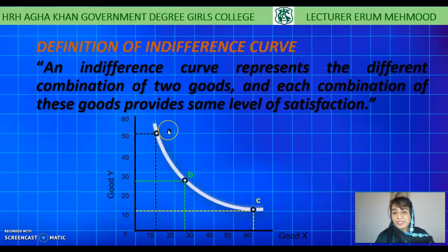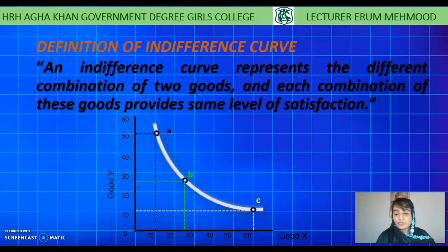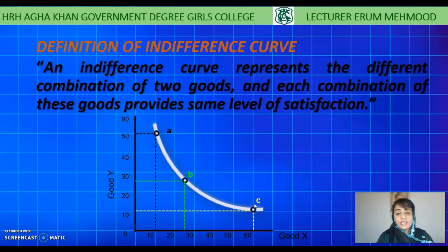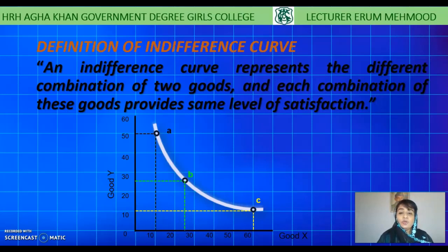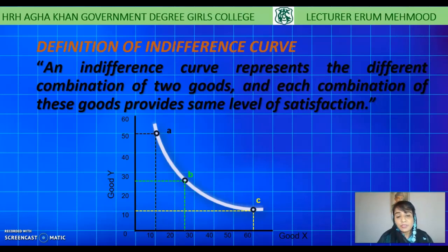You can see that at point A, the consumer is consuming 50 units of good Y and 10 units of good X. If he wants to increase the utility of good X, he sacrifices some units of good Y. At point B, he is taking 30 units of good Y and 25 units of good X. Again, if he wants to increase good X from 25 to 60 units at point C, he sacrifices 20 units of good Y, taking 10 units of good Y and 60 units of good X. So the indifference curve is the locus of all points providing the same level of satisfaction with different bundles of good X and Y.